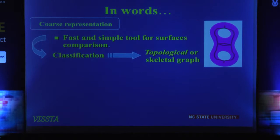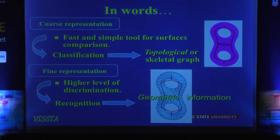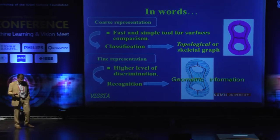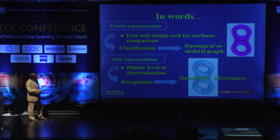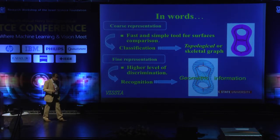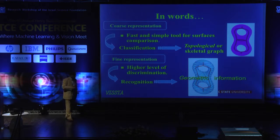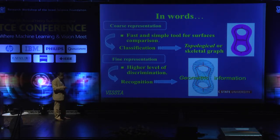So how do we use this? By defining this height function, we are able to extract the skeletal topological graph of the 3D object, and then by looking at the level sets of this function defined on the surface, we are able to capture the geometry. So this is all the level sets — you can capture the geometry as finely as you'd like, depending on how finely you sample the Morse function defined on your surface.